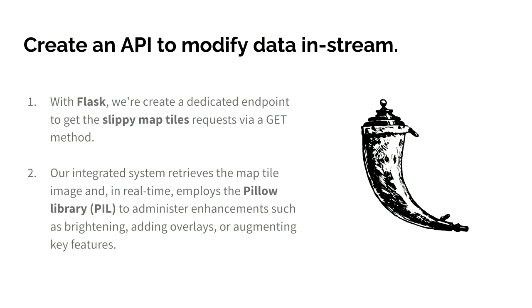The next step is creating an API to modify the data in stream. What I mean is I want to be able to modify this data and change its properties without saving it to a server — modifying that data in the byte stream and giving real-time data updates to the end user. The system retrieves a tile from the data store, then the API uses Pillow to modify that data, and the modified data gets returned to the client.